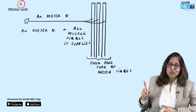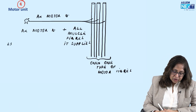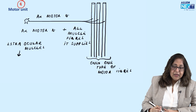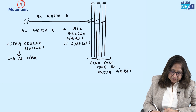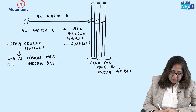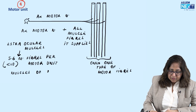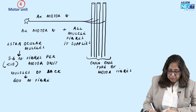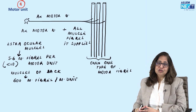The number of muscle fibers in each motor unit can be variable. Muscles which have finer control have smaller motor units. For example, extraocular muscles, which control the movement of the eyeball, have fewer muscle fibers per motor unit — 5 to 7, definitely less than 10. But in muscles of the back where fine control is not needed, the number of muscle fibers per motor unit is almost 600. Muscles with finer control have smaller motor units; those without need for fine control have larger motor units.